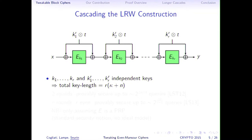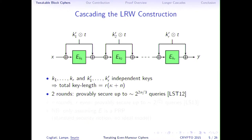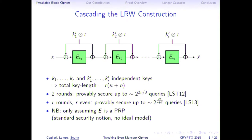If you want to obtain beyond-birthday-bound security, you can chain this construction with independent keys. The total key length increases linearly with the number of rounds. This was first proposed by Landecker, Shrimpton, and Terashima, who proved security up to 2^(n/3) queries for two rounds. If you increase the number of rounds, it has been proved secure up to 2^(Rn/(R+2)) queries, which asymptotically goes to 2^n queries. The security proof only assumes that E is a pseudorandom permutation; it does not require assuming an ideal cipher.